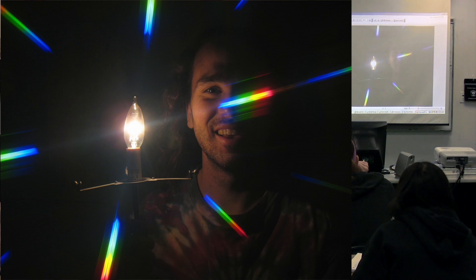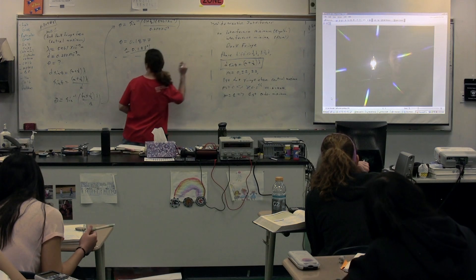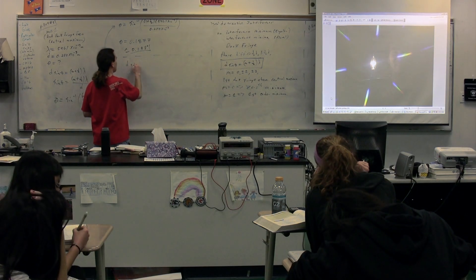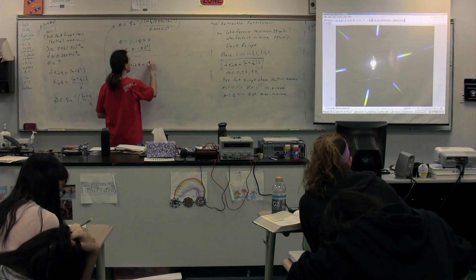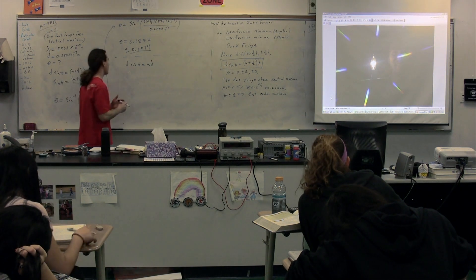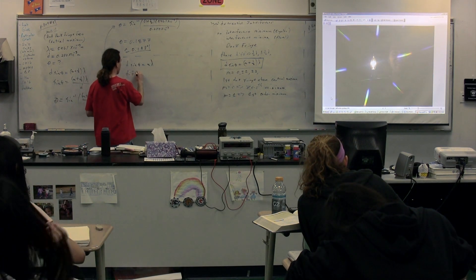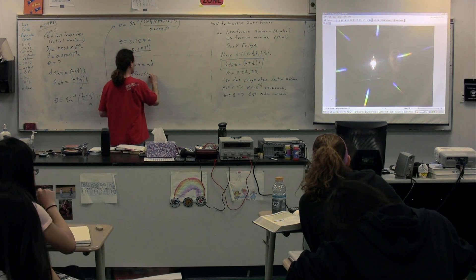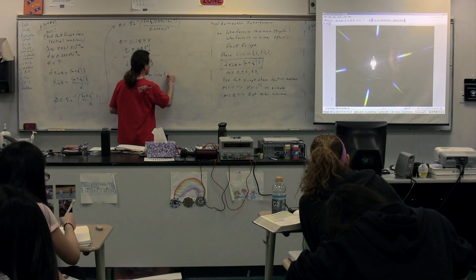So, when you are working with a diffraction gradient, you actually work with the exact same equations. So, you get d sine theta is equal to m times lambda for the constructive interference of a diffraction gradient.